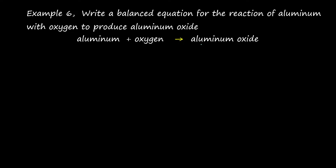The first step is to translate this word equation into a skeletal equation. Aluminium is Al, oxygen is O₂ — oxygen exists in diatomic form. The chemical formula for aluminium oxide is Al₂O₃.